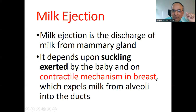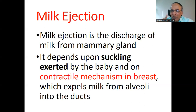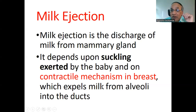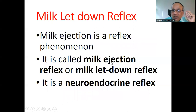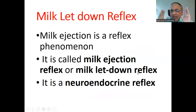Here we are not talking about lung alveoli; we are talking about the milk formation and ejection structure in the breast. These alveoli and ducts are related with milk production and milk storage. Milk ejection is a reflex phenomenon. It is called milk ejection reflex or milk let down reflex — these are two synonyms for the same thing.